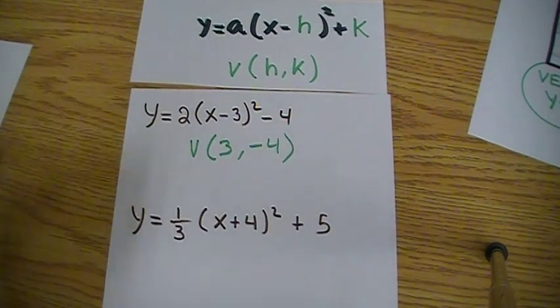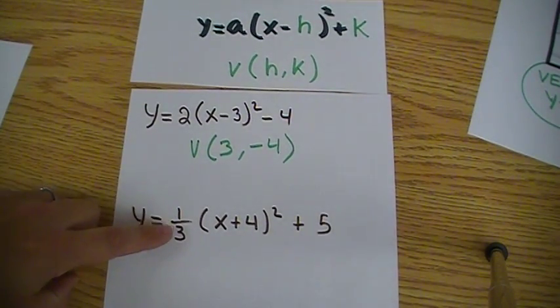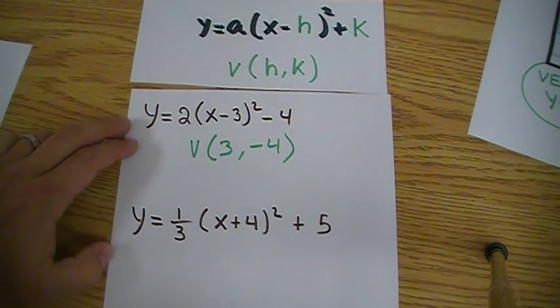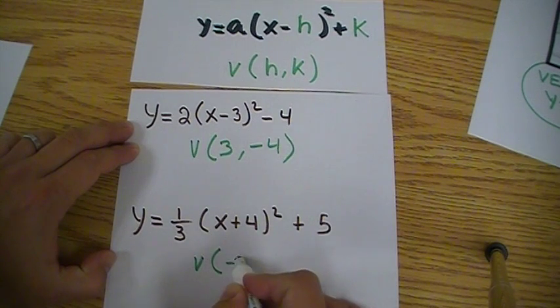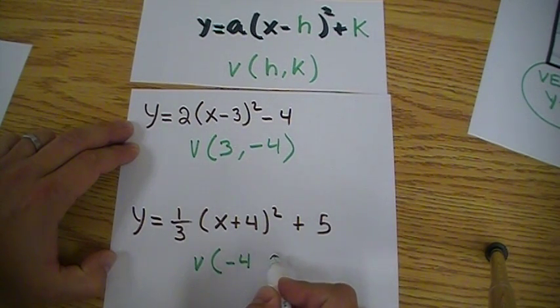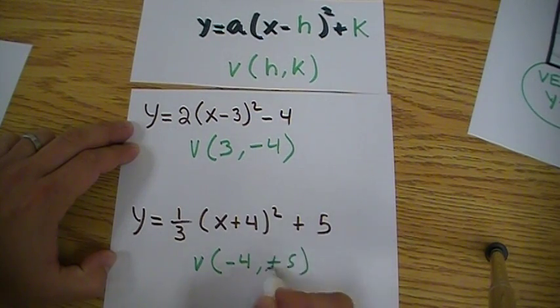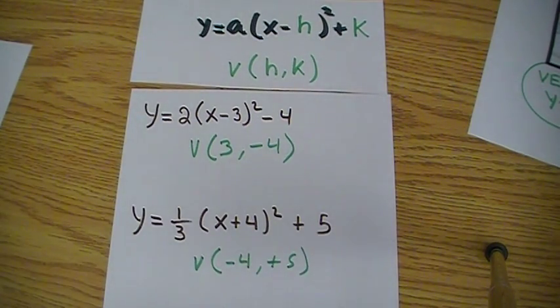If we try this different one, there's a value in front which is the one third, which doesn't matter for the vertex but will come in handy later on. Then this number would be the opposite, so that's minus 4, and this one would be the same, plus 5. You don't have to write that plus 5, that's just so you see it.